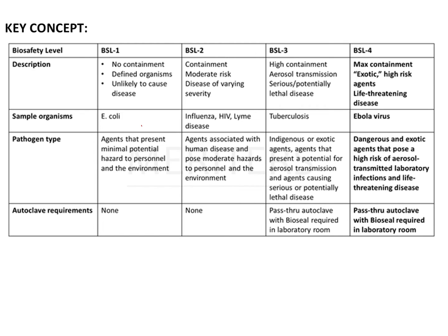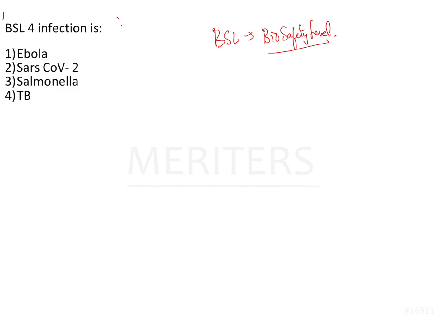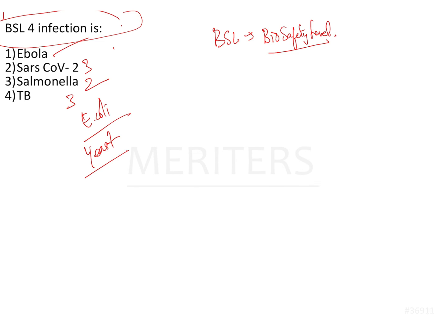To recap: E. coli is BSL 1. Influenza is BSL 2. HIV and tuberculosis are BSL 3. Ebola is BSL 4. Remember that BSL 3 involves inhalation-type transmission, moderate-to-high risk, and autoclave instruments with a bio-seal. COVID-19 is classified as BSL 3. BSL 4 is life-threatening — Ebola being the prime example. BSL 1 organisms include E. coli and yeast. Please understand the descriptive part — how laboratory personnel should work — and the examples, as exam questions mostly focus on the examples.